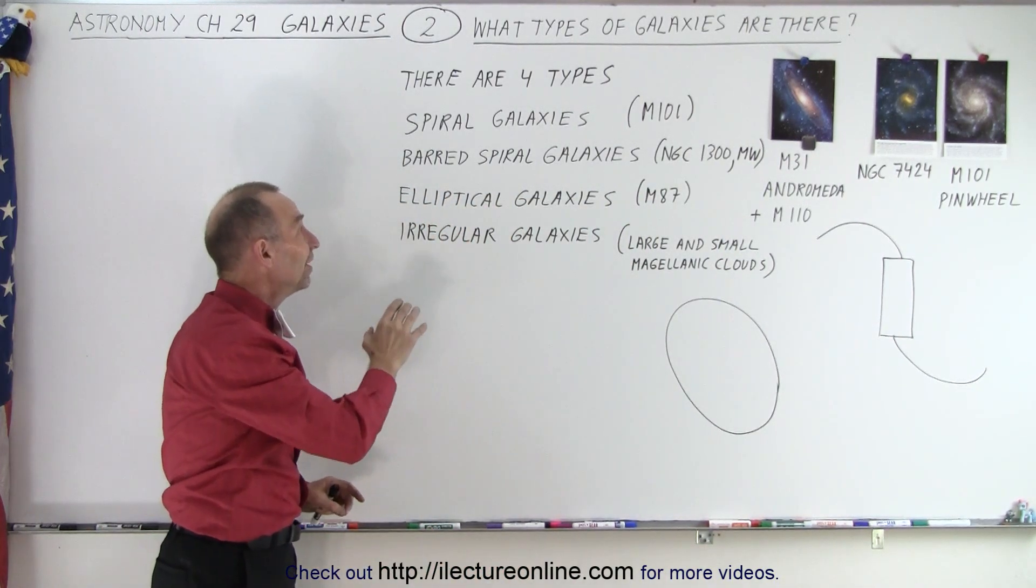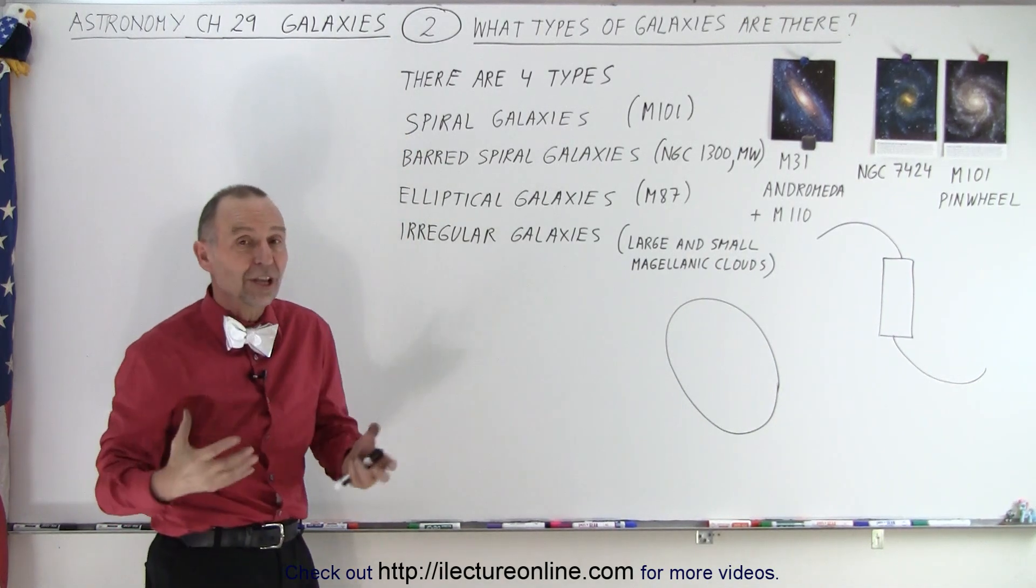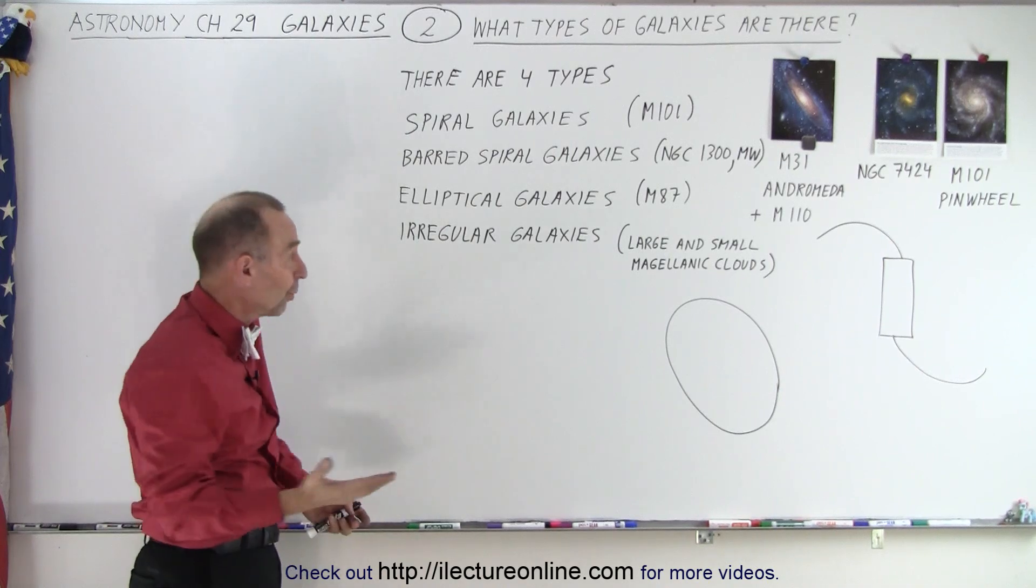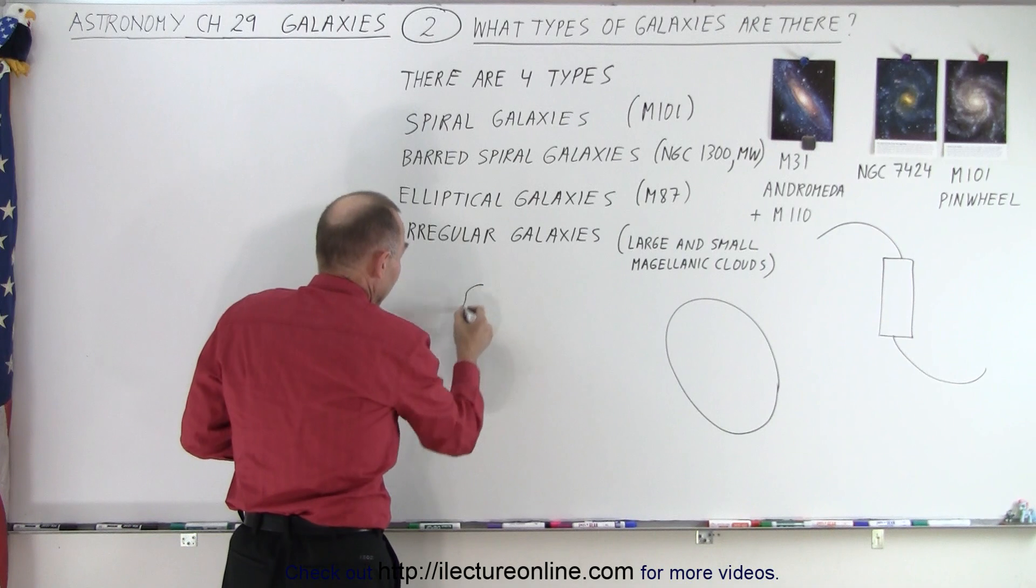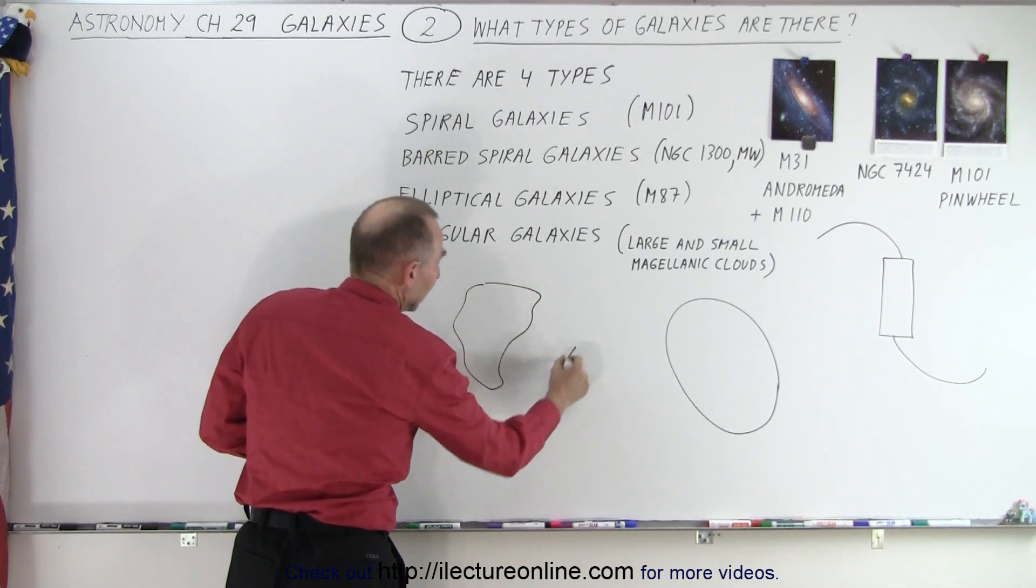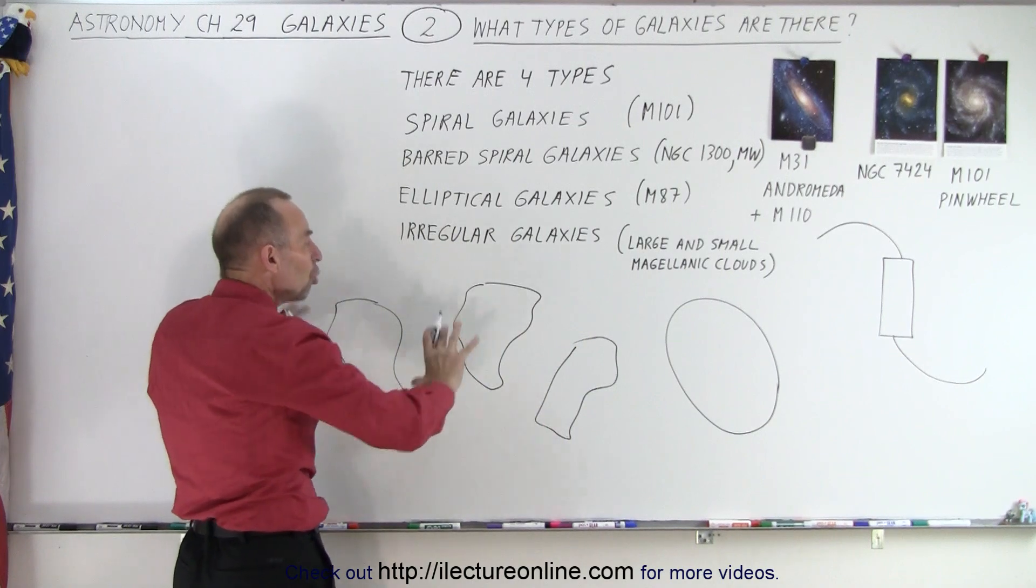And then finally, the last category is the type of galaxy that doesn't fit in any of the previous three categories. It's what they call irregular shaped galaxies. And truly, the reason why we call them that is there's no particular shape. They can look like anything—they can look kind of like this, and they can look like this, and they can look like this. There's just no shape to them.